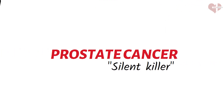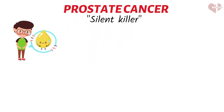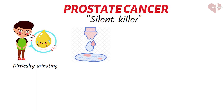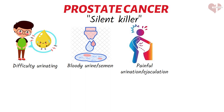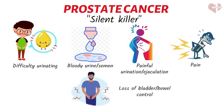Prostate cancer is often referred to as a silent killer because it may not cause any symptoms in its early stages. However, as the cancer grows and spreads, it can begin to cause a variety of symptoms that may include difficulty urinating, including a weak or interrupted urine flow or the need to urinate more frequently; blood in the urine or semen; pain or discomfort during urination or ejaculation; pain or stiffness in the lower back, hips, or thighs; and loss of bladder or bowel control in advanced cases.